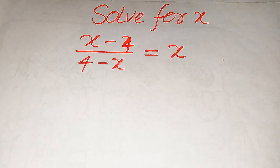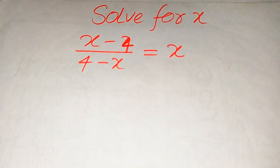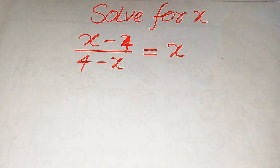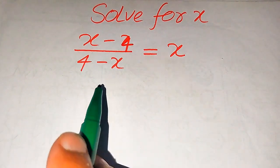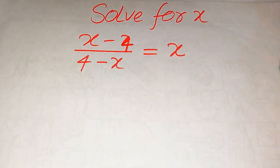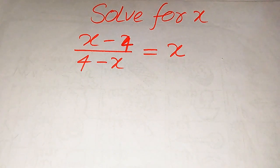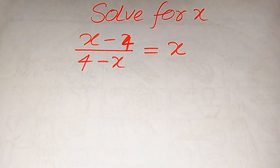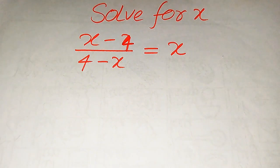Hello everyone. How to solve this problem for the values of x if we have (x minus 4) divided by (4 minus x) equals x. We solve this problem for all the values of x. First we find all the roots of this equation, and at the end we will verify which of the roots are solutions and which are extraneous roots.